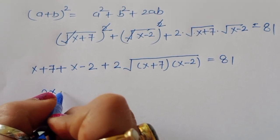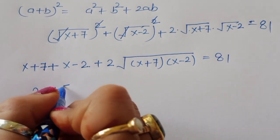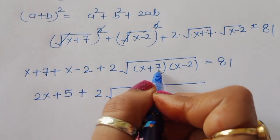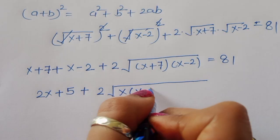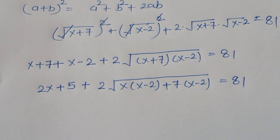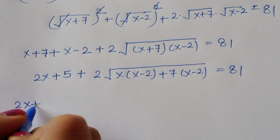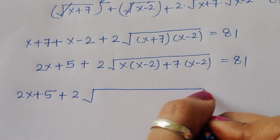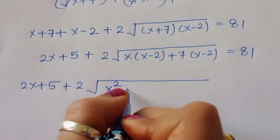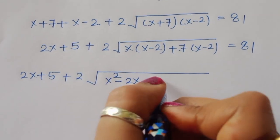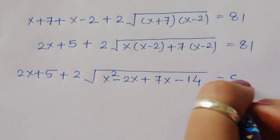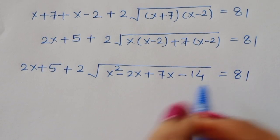Now expanding inside the square root: (x+7)(x-2) = x·(x-2) + 7·(x-2) = x² - 2x + 7x - 14 = x² + 5x - 14. So we have 2x + 5 + 2·√(x² + 5x - 14) = 81.